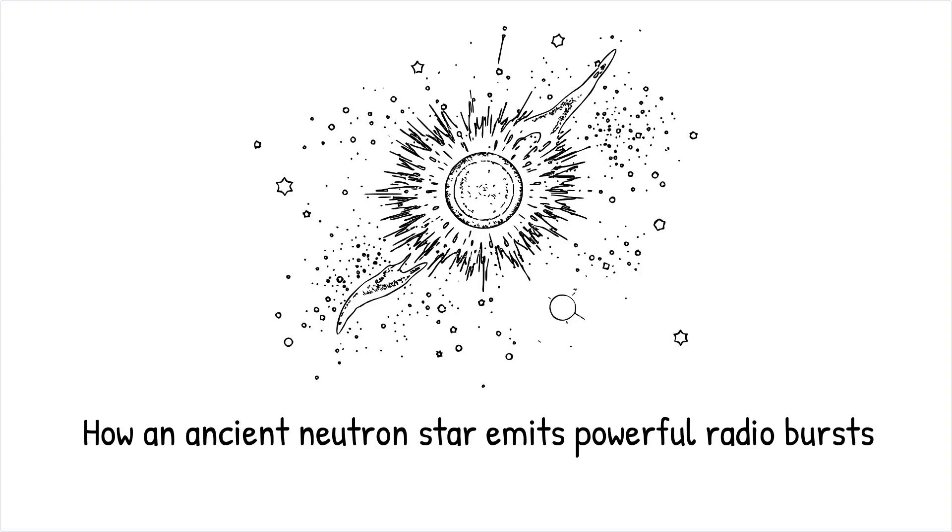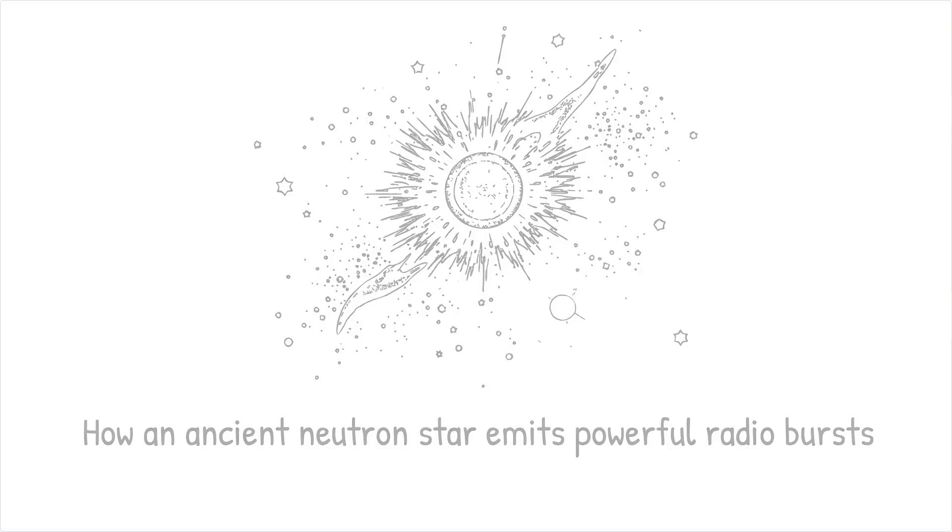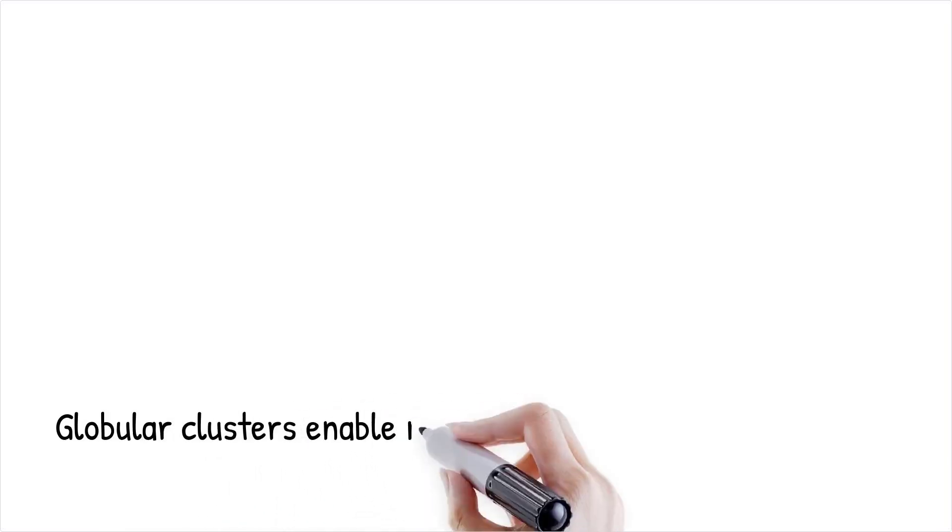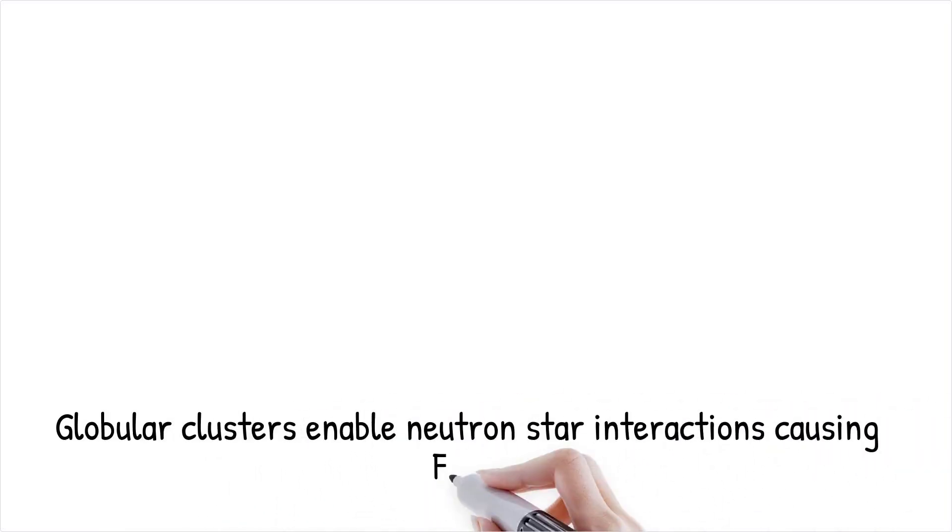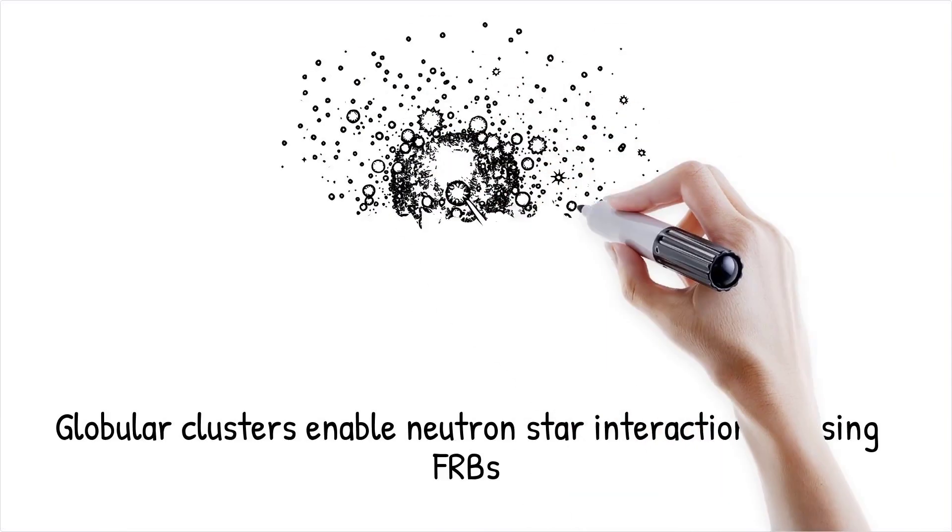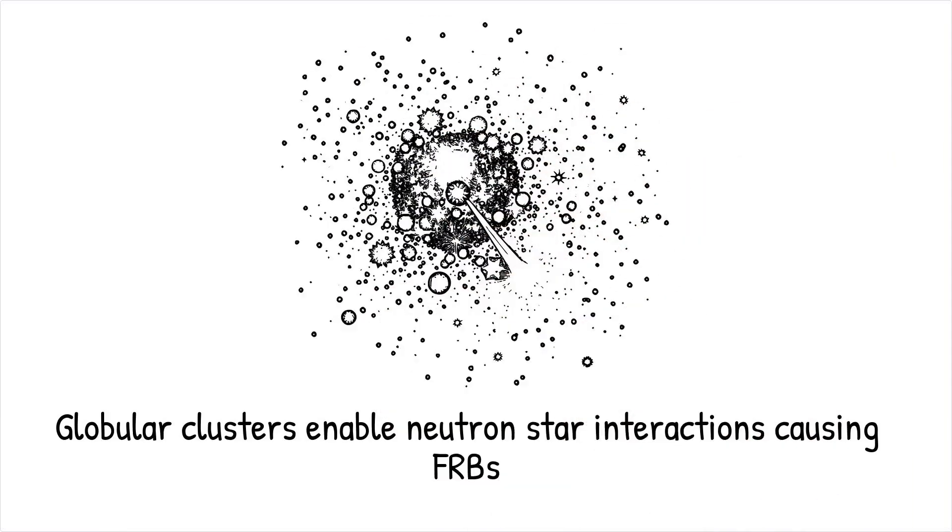Globular clusters, which host dense populations of aging stars, could provide the necessary conditions for neutron star interactions, leading to sporadic bursts of radio waves. Finding an FRB in an old galaxy is like discovering an active volcano in a region thought to be geologically extinct, indicating hidden forces at work beneath the surface.